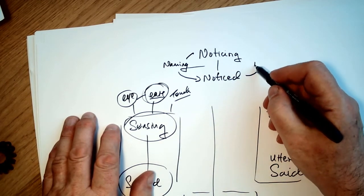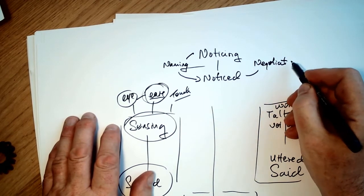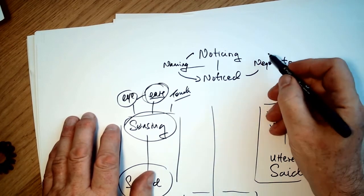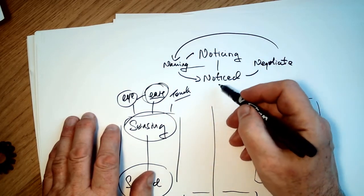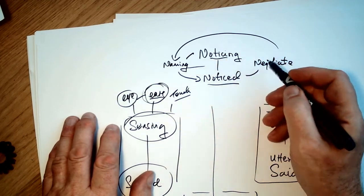And once we've named things, we can begin to negotiate. And indeed, we may in our negotiating, change the naming, which in turn changes what's noticed and affects how we do the noticing.